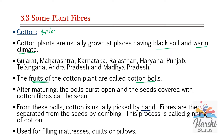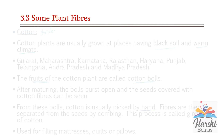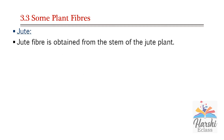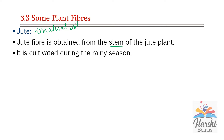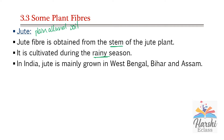The next plant fiber is jute. Jute fiber is obtained from the stem of the jute plant. Jute crop mainly grows in plain alluvial soil and is cultivated during the rainy season because it needs more water. In India, jute is mainly grown in West Bengal, Bihar, and Assam. Jute is mostly produced in Bangladesh.